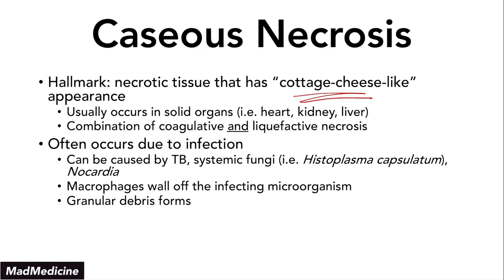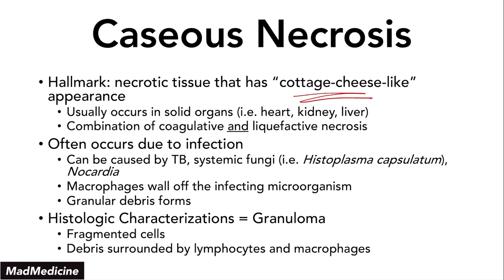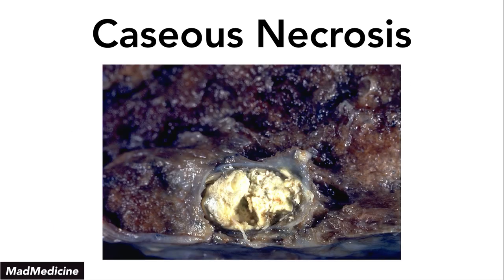The histologic characterization you're going to see is a granuloma — fragmented cells with debris surrounded by lymphocytes and macrophages. This is what caseous necrosis looks like. Told you you will never forget this — cottage cheese. This is liquefactive and coagulative necrosis occurring essentially at the same time, and that's why you get caseous necrosis.